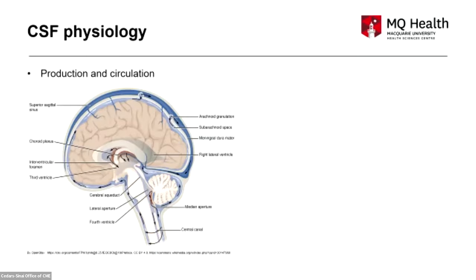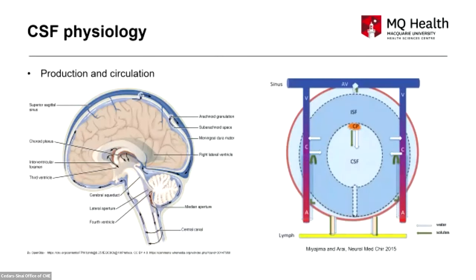We all start in medical school thinking about the standard model of CSF circulation — I won't go through that because I'm sure everyone knows it — but I'll draw attention to the fact that in most diagrams the spinal CSF receives almost no attention: CSF just goes into the spine and somehow comes back. But we now know that CSF physiology is a lot more complex than that.